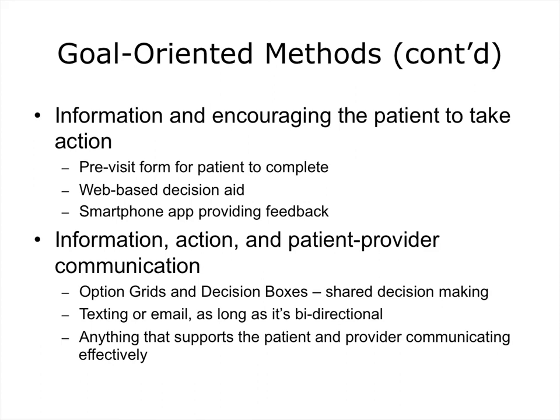The second goal-oriented method is to provide the patient with information and then encourage them to take action. For example, this might be a pre-visit form for the patient to complete, which may highlight areas that you would like the patient to ask you about. You might have a web-based decision aid for the patient — you see this especially with patients who have chronic illnesses such as diabetes. Or it could be a smartphone app providing feedback to the patient, such as wearable activity monitors where you ask the patient to use the monitor, hopefully with the expectation that it will help them increase their activity levels.